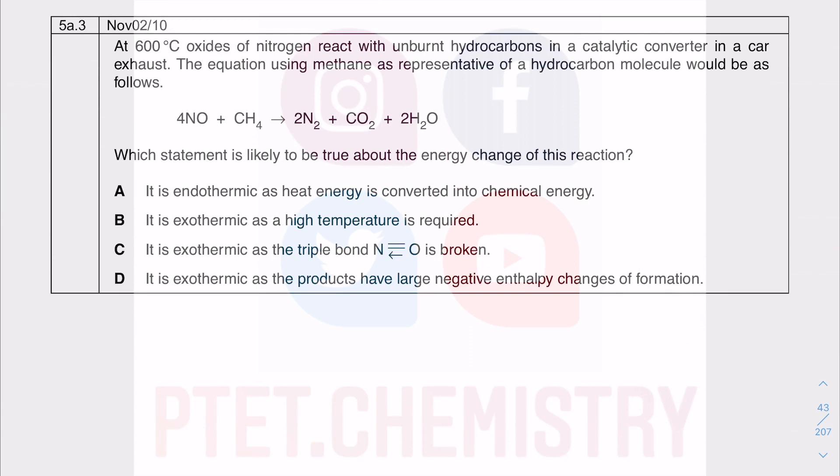So next question is just a random reaction. NO reacts with CH4, giving you N2 gas, CO2 and H2O. Now, the fact that you are forming N-N triple bonds means that you will release a lot of energy when you form this N-N triple bond. Because breaking it requires a lot of energy. Making it or forming it as a product will release a lot of energy. So overall it will be exothermic.